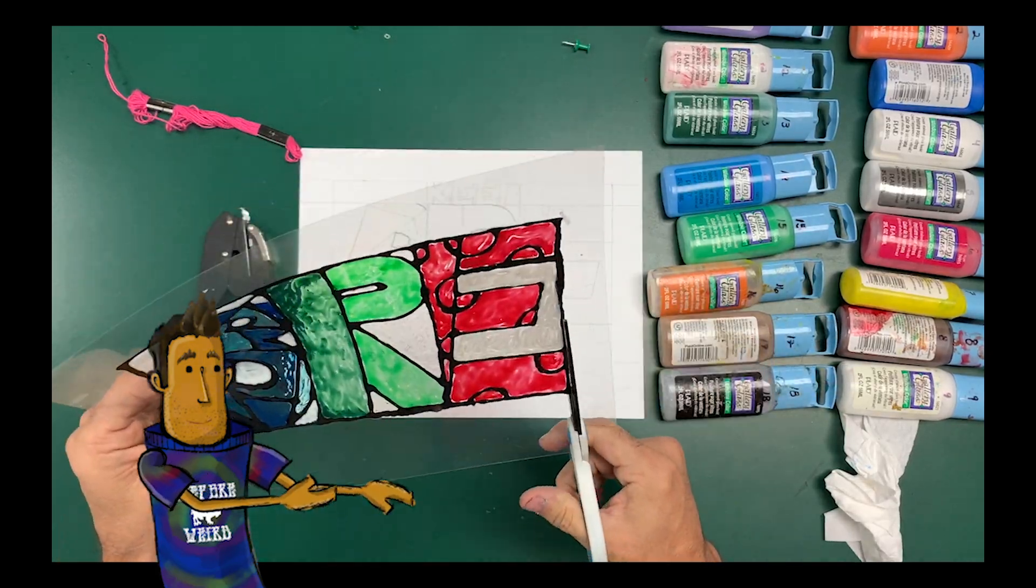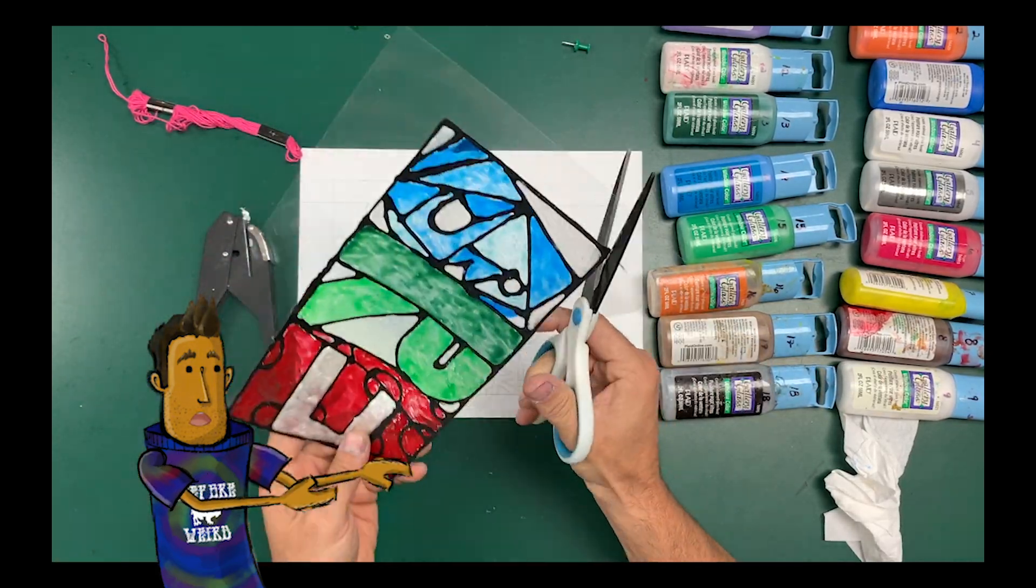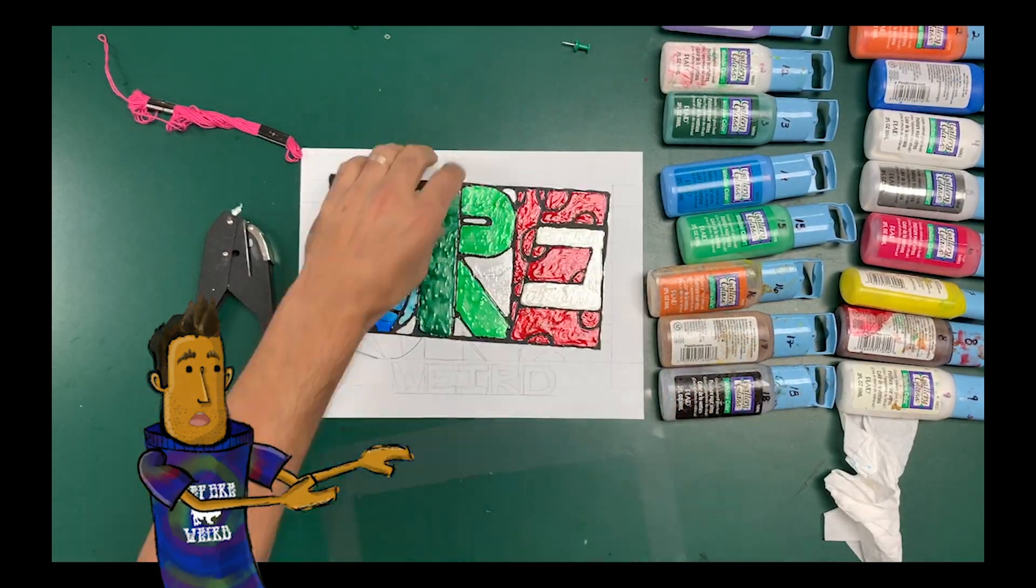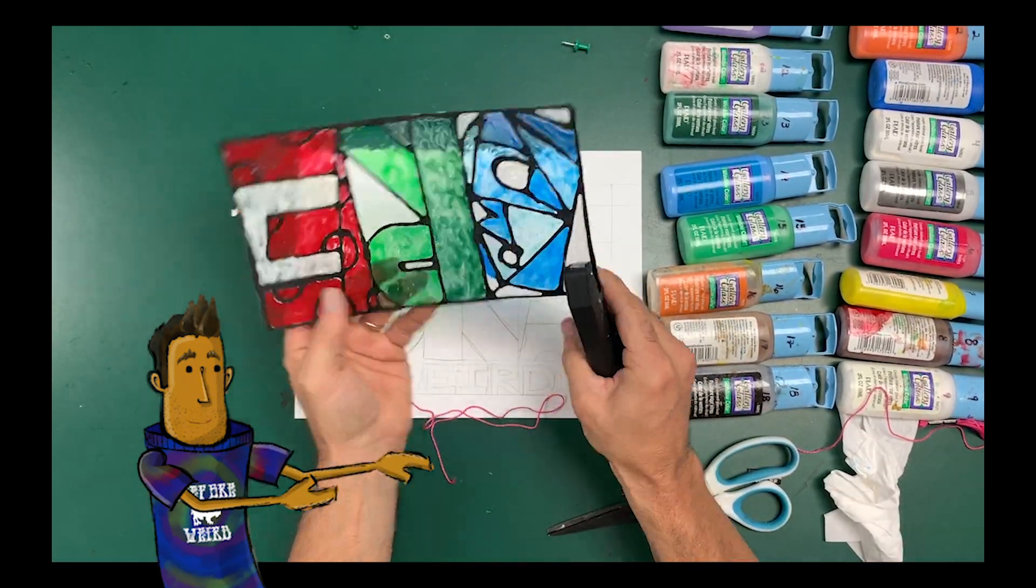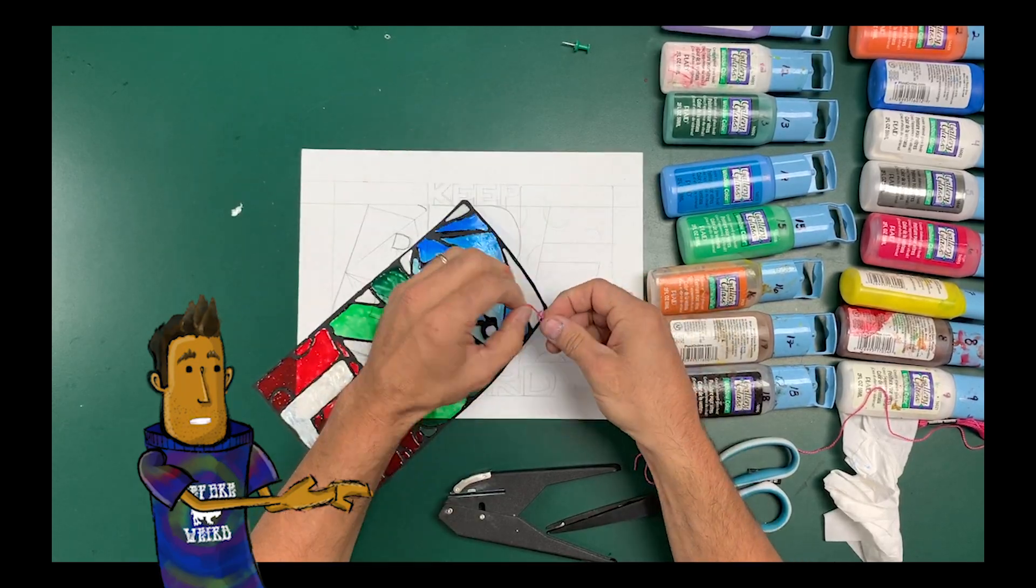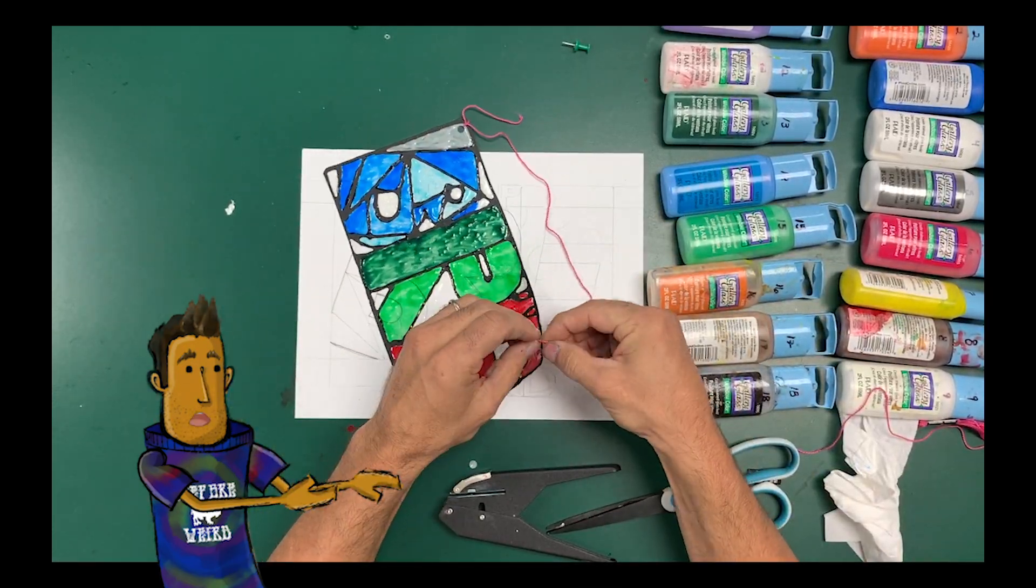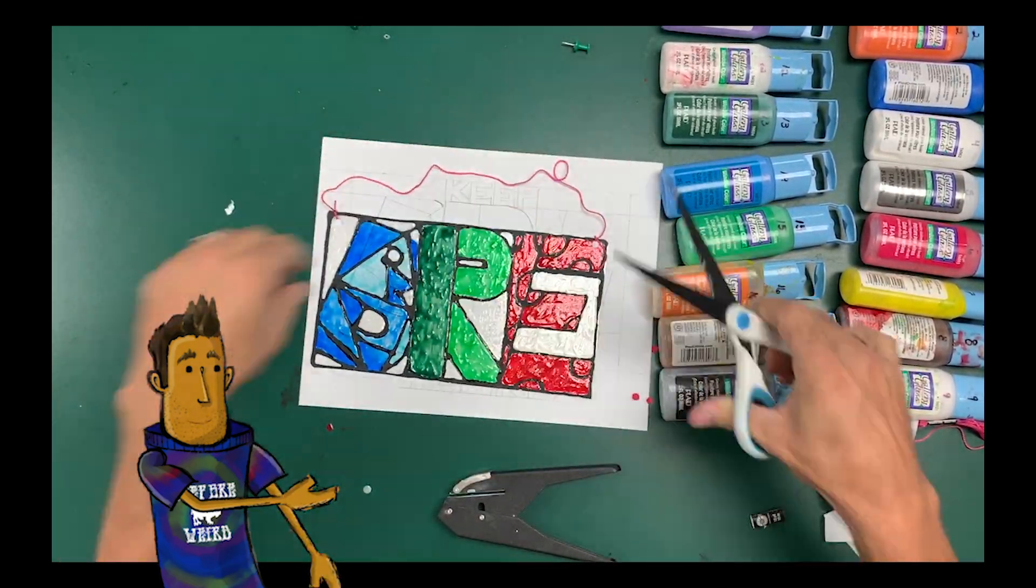What we will do is cut off the extra clear part outside. Make sure you work big so that you fill most of the transparency. And then we're going to pop either one or two holes in the top and tie whatever color string you want to the top so that we have something to hang it on.